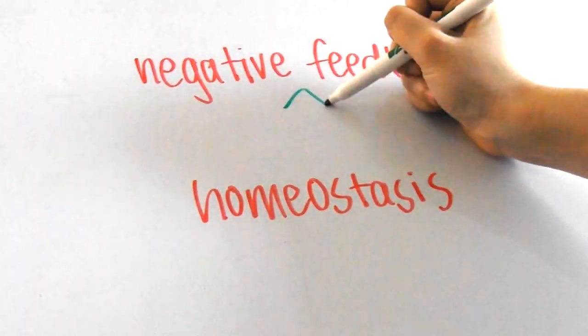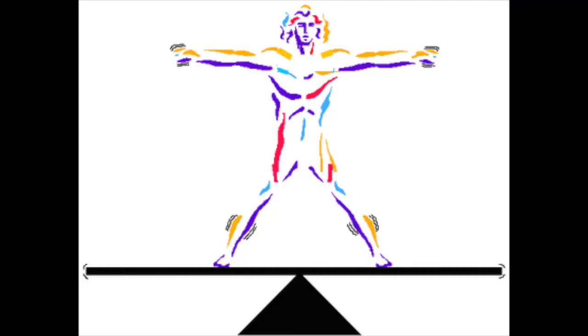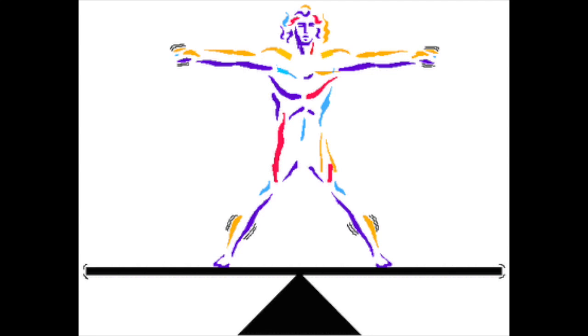Negative feedback is related to the idea of homeostasis, and remember, homeostasis is when a biological system is able to maintain its conditions and processes according to whatever is going on outside.